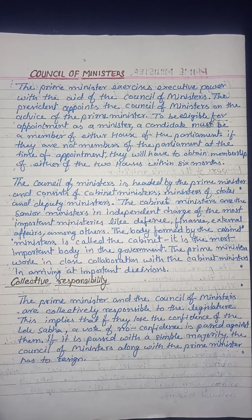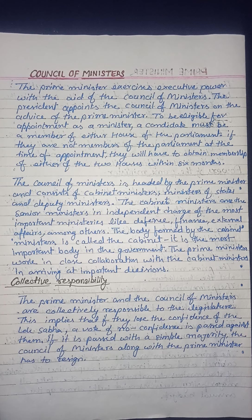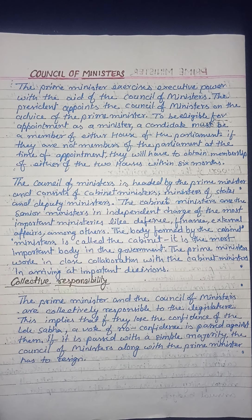The council of ministers is headed by the most powerful leader, the prime minister, along with cabinet ministers. The cabinet includes senior ministers such as the defense minister, the finance minister, and others.